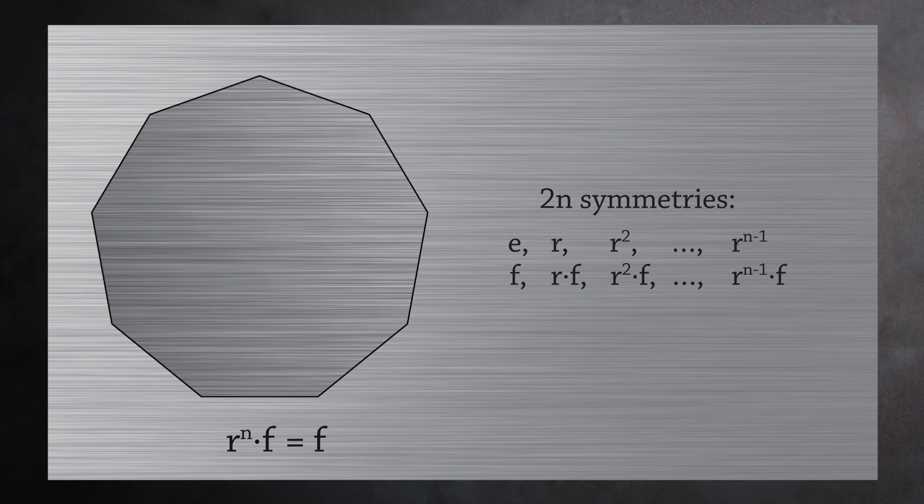So there are a total of 2n different symmetries for a regular n-sided polygon. Because there are only a finite number of elements in this group, we say the dihedral group is a finite group.